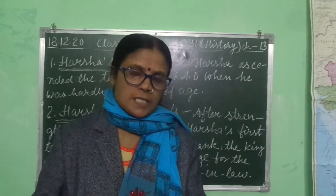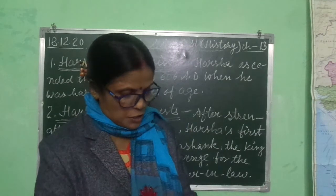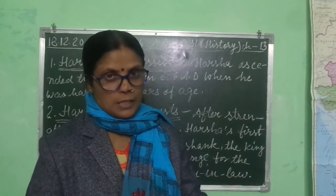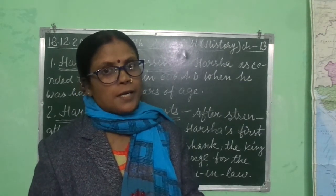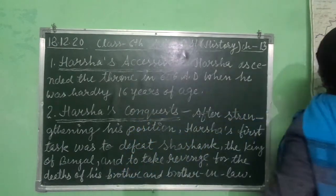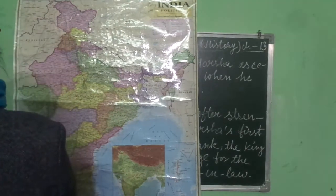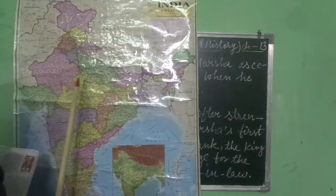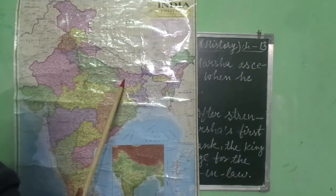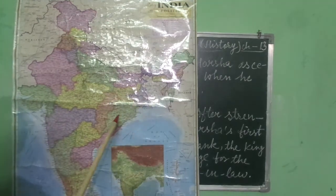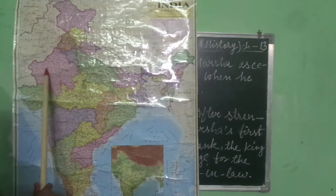Harsha's empire included Eastern Punjab, the whole of Uttar Pradesh, Bihar, Bengal, Odisha, and parts of Sindh and Kashmir. You can also see this through the map provided — Map 13.2, Empire of Harsha. Looking at the map: Uttar Pradesh, then Bihar, then West Bengal, Odisha, some portion of Sindh, and also Kashmir.